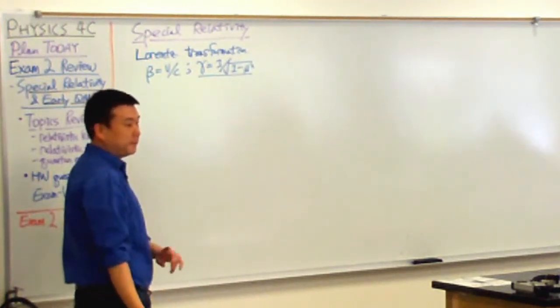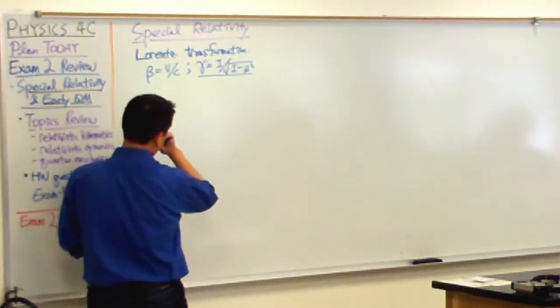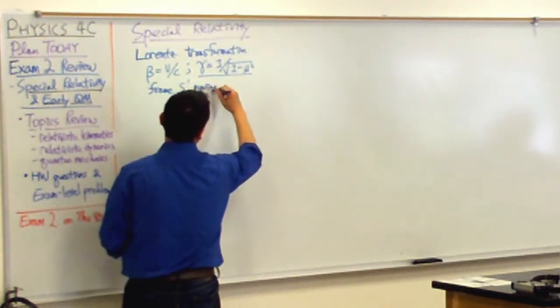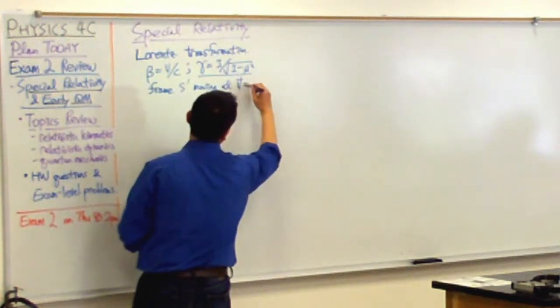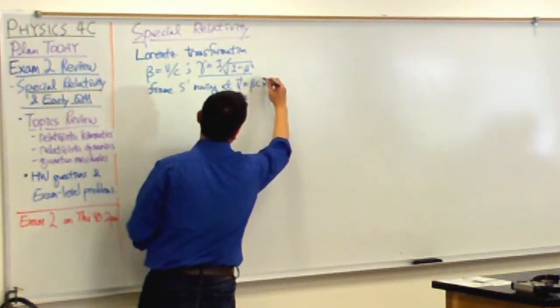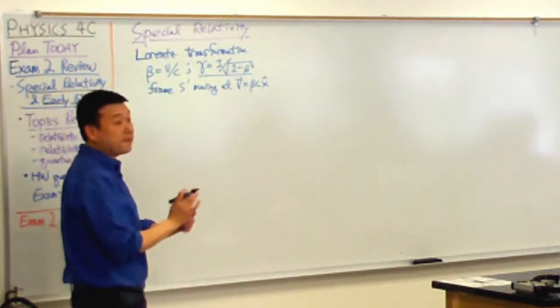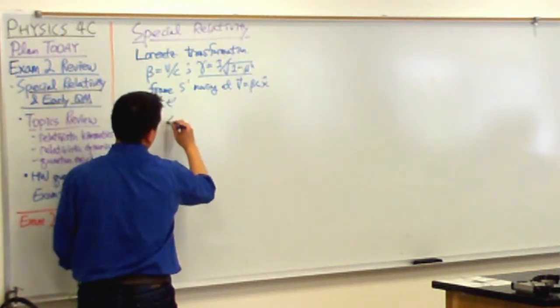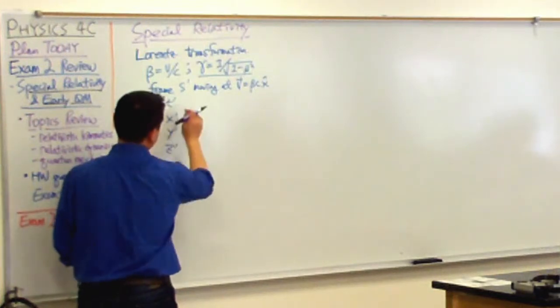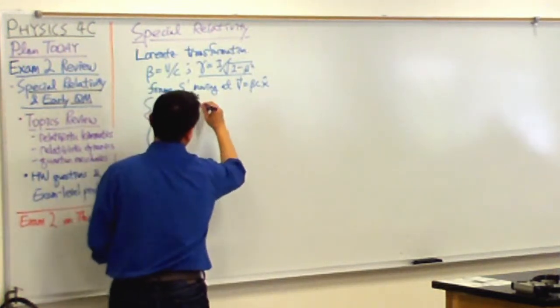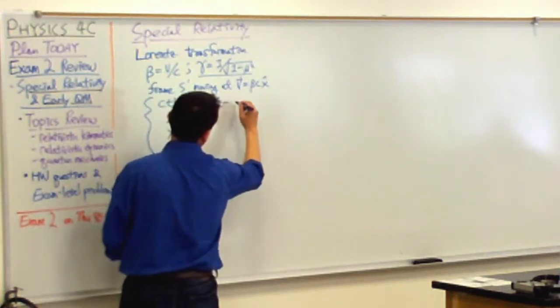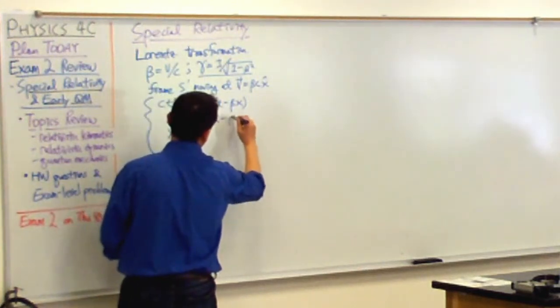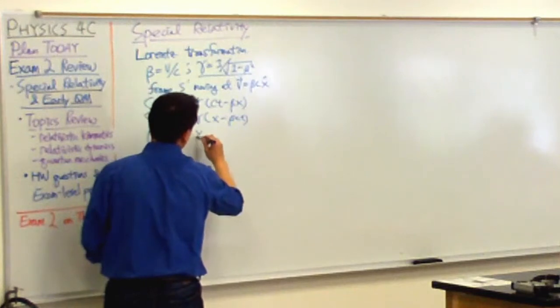So this is the form I always write down in. So you have frame S prime moving at relative speed of beta C in the positive x direction relative to frame S, then this is the transformation rule. The time coordinate, position coordinate in the S prime frame is given by this Lorentz transformation. Gamma CT minus beta X, gamma X minus beta CT, Y, and Z.